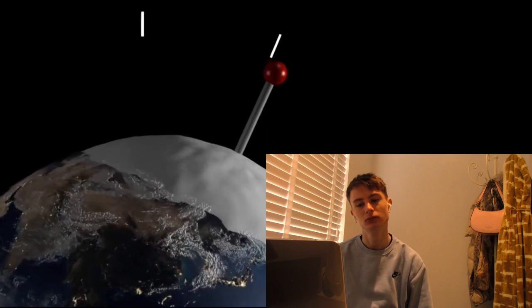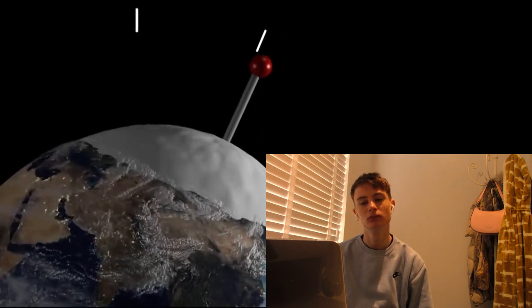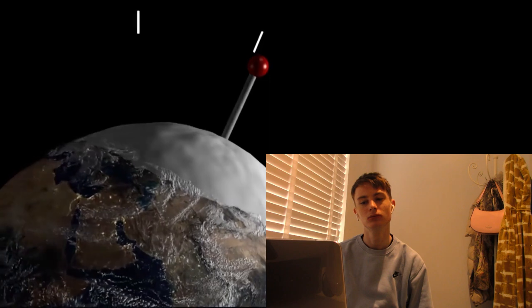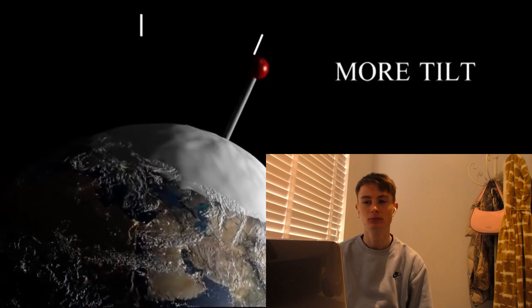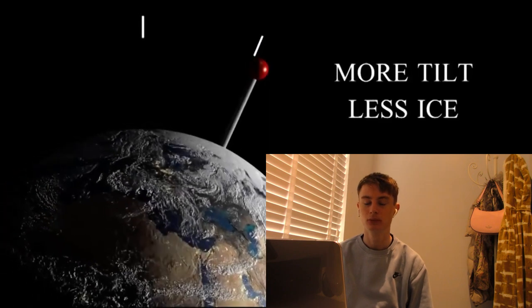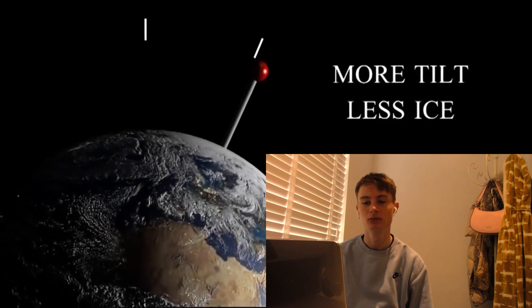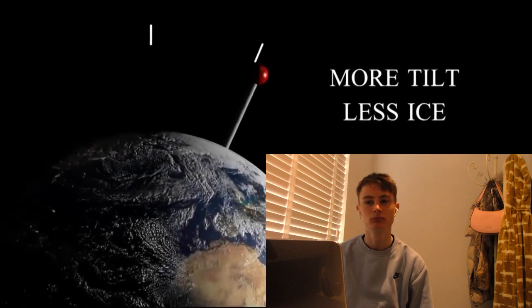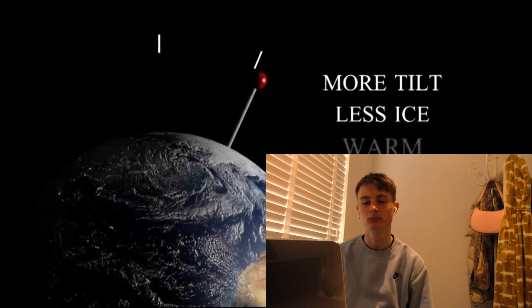When the Earth is more tilted, there's more sunlight during the summer. More summer sunlight means that more of our ice melts away. That is true, yeah. With less ice on the ground, less light is reflected away, giving us a warmer climate.